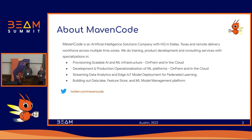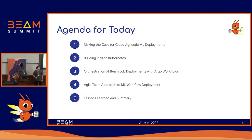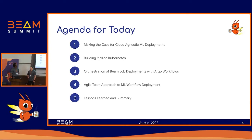MervinCode is a company based out of Dallas. We do a lot of AI solutioning — we're Google Cloud Partners and AWS Partners. The agenda for today is to talk about Kubeflow deployment and making MLOps deployment for cloud-agnostic infrastructure, including how you can deploy your infrastructure and Beam jobs with Kubernetes on different cloud providers and on-prem.